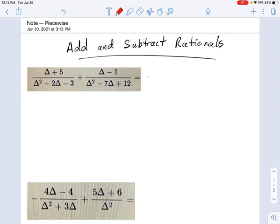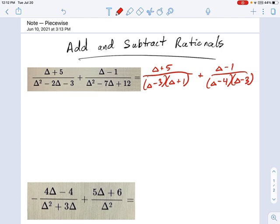So I'm going to factor the one on the left first. I have delta plus 5 on top, and on the bottom I have delta minus 3 and delta plus 1. And on the right side I have delta minus 1 on top, and what is this? That looks like delta minus 4 and delta minus 3. So double check your factoring, make sure everything's good there.